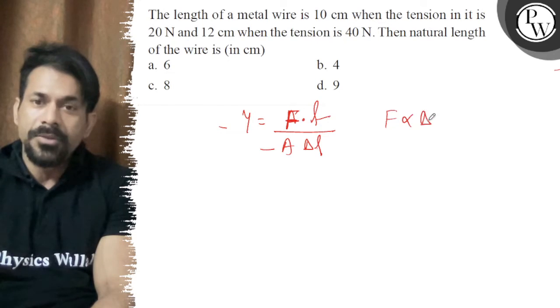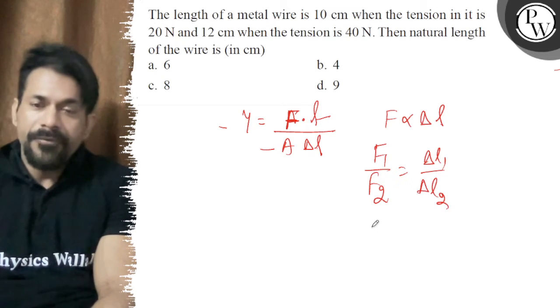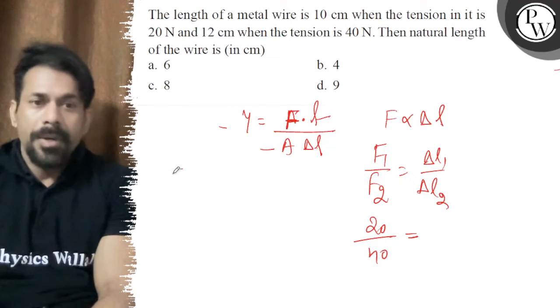F is directly proportional to del L, so F1 upon F2 is nothing but del L1 upon del L2. So F1 is 20, F2 is 40. For del L1, assume you have L naught length, and stretching it, it becomes L.